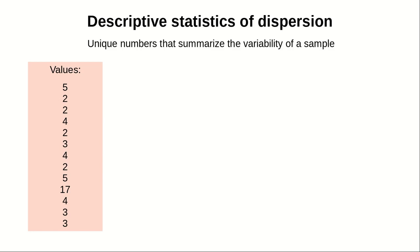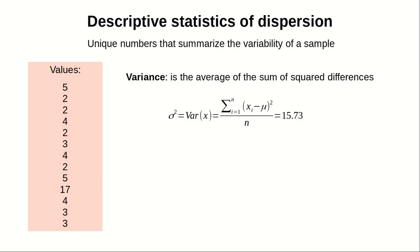But the most important measure of variability in statistics is by far the variance. The variance is the average of the sum of squared differences. It looks a bit difficult, and the formula, the first time you see it, it looks a bit complex, but actually it is not. So the variance, which we call sigma squared or var of x, equals the summation of all the squares of the difference between the mean that you compute and each value, and then you divide by the number of samples. So in that case, the variance will be 15.73.